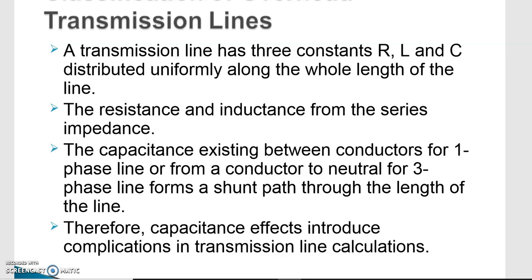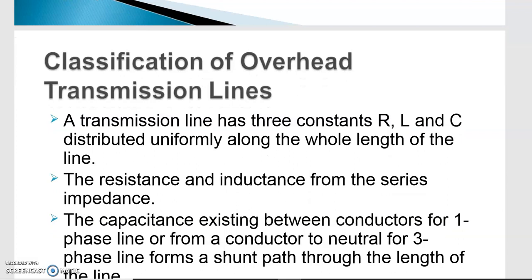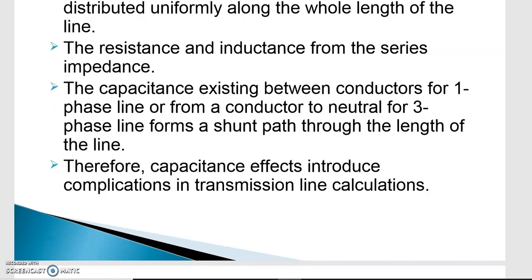First of all we should know about the various line parameters. The three main line parameters or line constants are resistance, inductance, and capacitance, which are distributed uniformly along the whole length of the line. The resistance and inductance form the series impedance, that is Z = R + jωL. The capacitance existing between conductors for a single-phase line, or conductor to neutral for a three-phase line, forms a shunt path through the length of the line. Therefore, capacitance effect introduces complications in transmission line calculations.